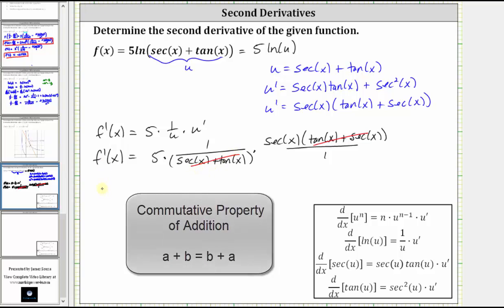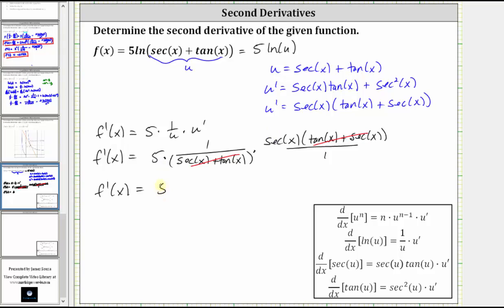The quotient of these two sums simplify to one, giving us a first derivative of just five secant x, which makes finding the second derivative much easier than finding the first derivative.